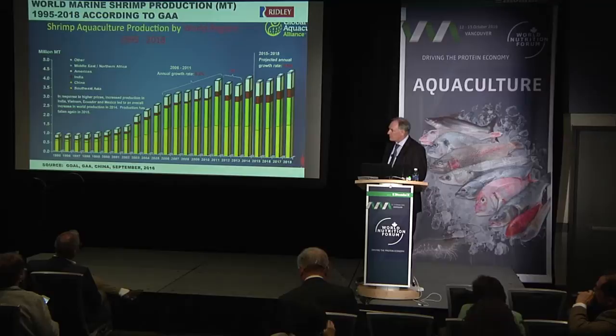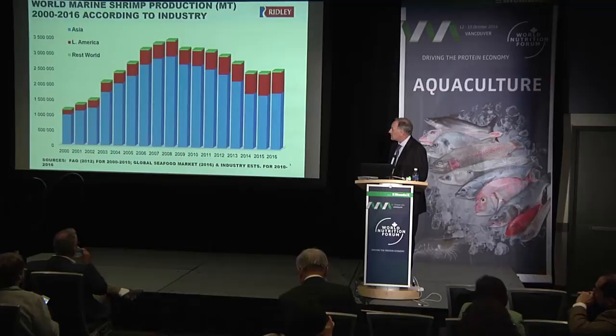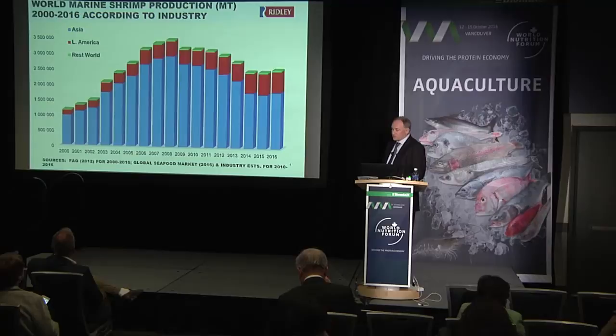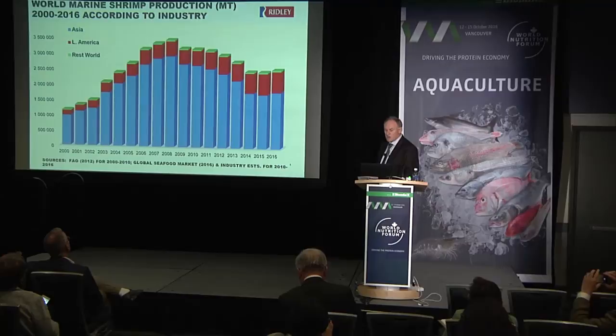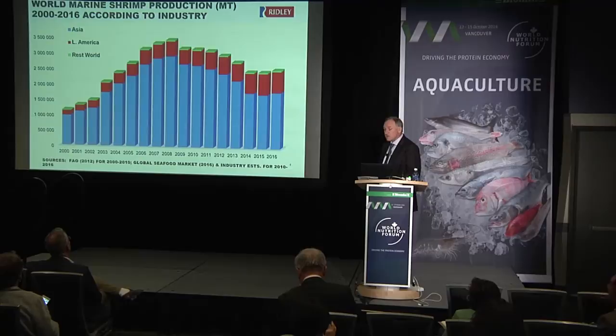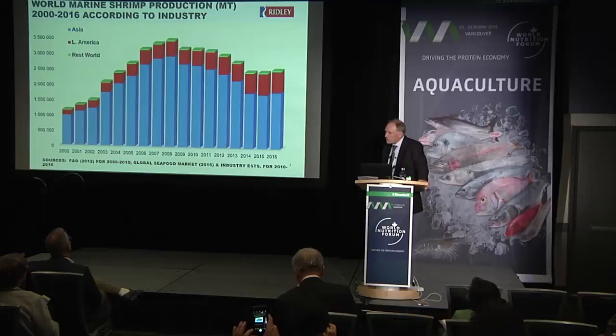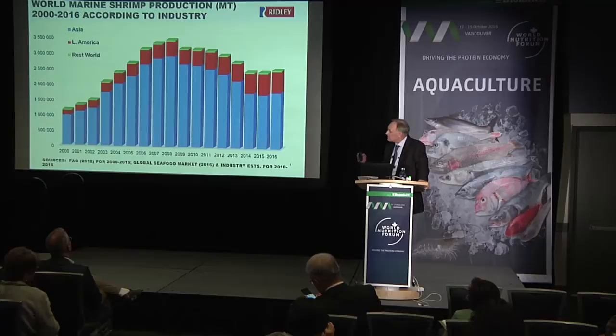I think that looks great on paper but actually bears very little resemblance to the real truth. This is information using FAO figures up to 2012, but then they get a bit uncertain. There was a global seafood market conference in 2016 and industry estimates were incorporated, and I think this gives a much more realistic picture. You can see that since about 2009 there's actually been a decline in production.